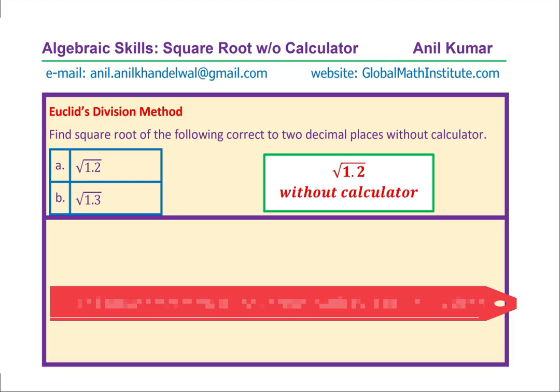Euclid's division method. This is a very special division method by which you can find square root of a number without calculator. We'll take up two values and then figure it out. You can always learn from me different techniques and master in mathematics, just as many of my students have done.